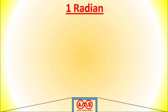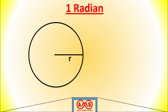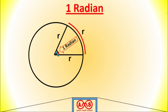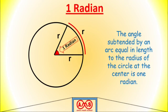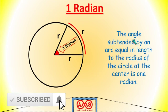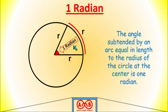Now let's see what 1 radian is. For this circle, this one is the radius, this one is another radius, and this one is the arc of length r — that is, the arc which is equal to the radius r. In that case, this central angle is 1 radian. That is, the angle subtended by an arc equal in length to the radius of the circle at the center is 1 radian. When the arc length is equal to the radius of any circle, the angle subtended by that arc at the center is 1 radian.